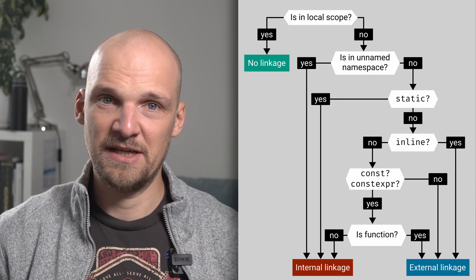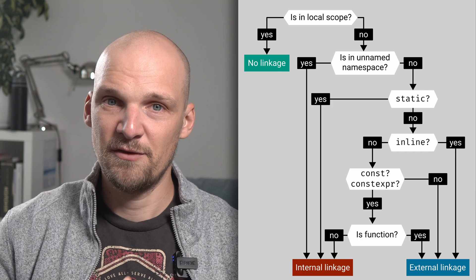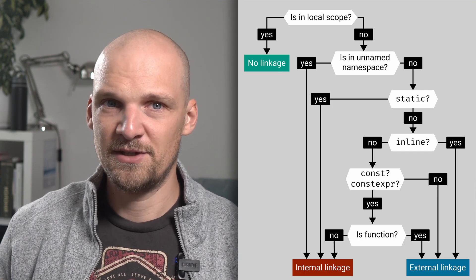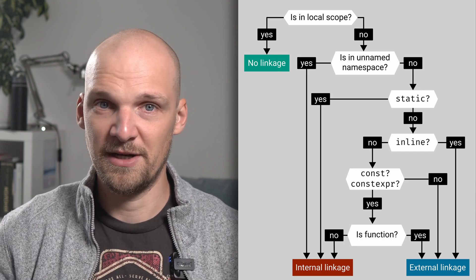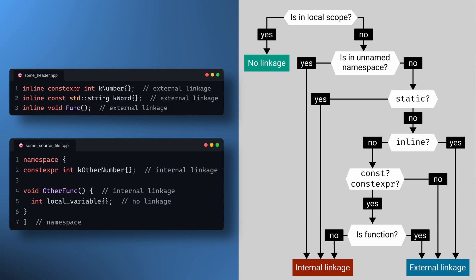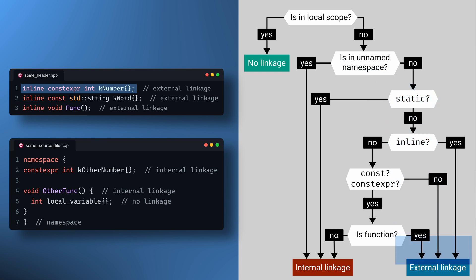This chart should work with any function or data declaration you might encounter. If you are looking at a function, ignore the return type along with any const qualifiers it might have, then follow the chart by answering the questions. Let's see an example that follows best practices. Looking at kNumber: is it in local scope? No. Is it in an unnamed namespace? No. Does it use the static keyword? No. Is it inline? Yes — which brings us to it having external linkage. Feel free to do this with all other examples or any code you encounter.